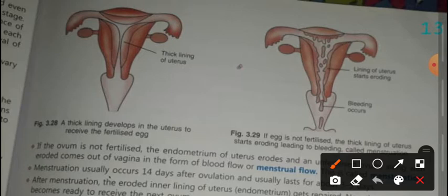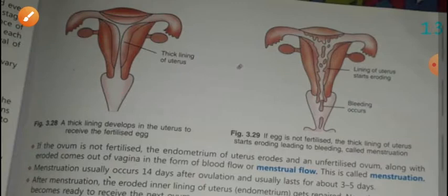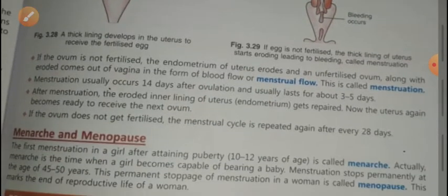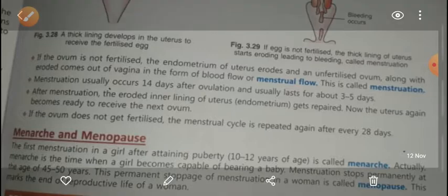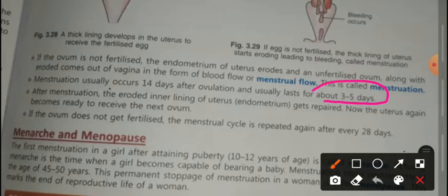Look at this picture. When the egg is not fertilized, you can see how it breaks, and through the vagina it is released out from the body as a result of blood flow. This blood flow will occur for 3 to 5 days.